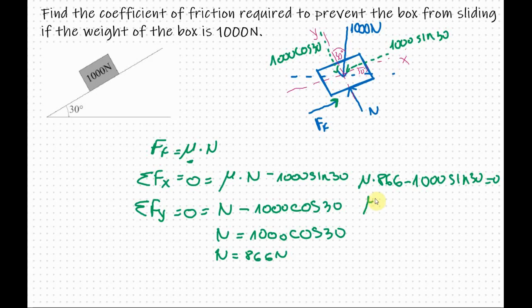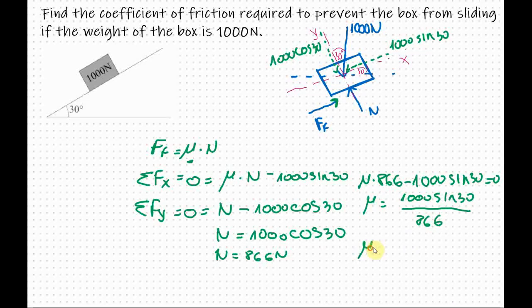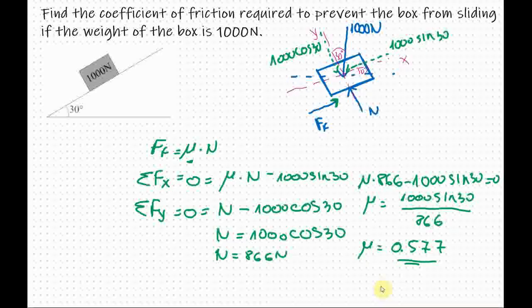So now I will leave μ on this side and I will transfer everything to the other side. So I have 1000 sine 30 over 866. So μ, if I plug everything in the calculator, I get a value of 0.577 for the friction coefficient.